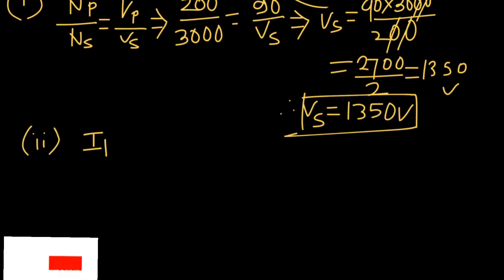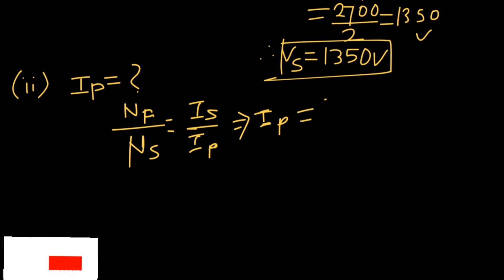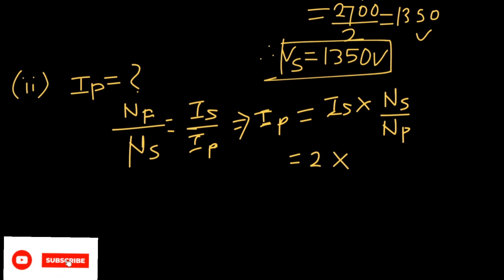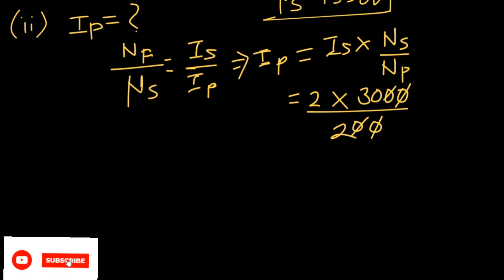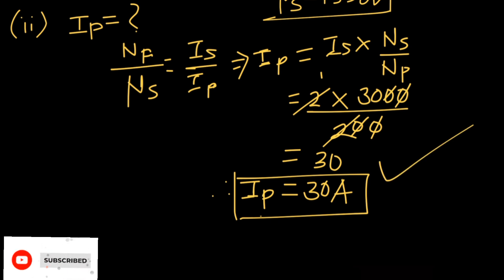Now we have to find the second unknown, IP. Using the turn ratio relation NP/NS = IS/IP, I know three quantities: NP, NS, and IS. So I can find IP. Rearranging: IP = IS × NS / NP. Substituting: IS = 2 amperes, NS = 3000, NP = 200. The two zeros cancel, and 2 × 3000/200 simplifies — the zeros cancel giving 2 × 15 = 30. So IP = 30 amperes. That is my final answer for this second sub-question.